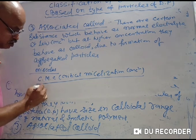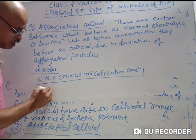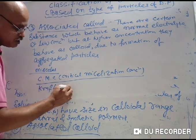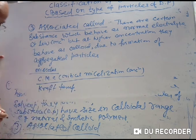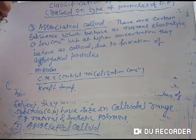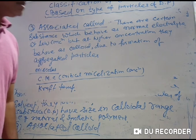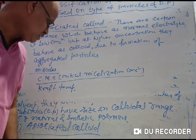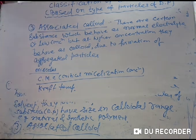The other important term is Kraft temperature. What is Kraft temperature? The formation of micelles takes place above a particular temperature, and that temperature is known as Kraft temperature. Every micelle system has a specific value of CMC and Kraft temperature.